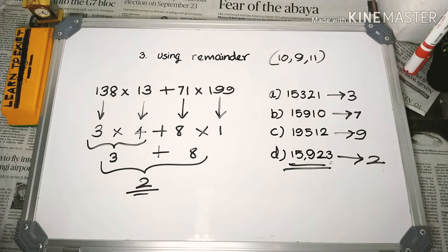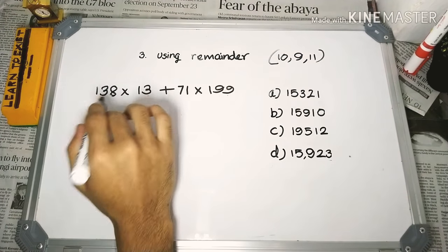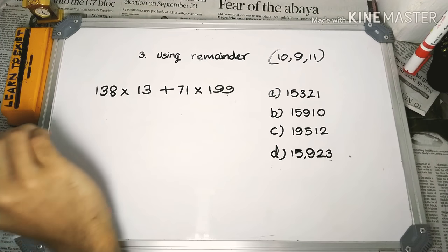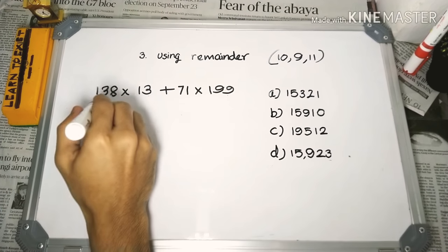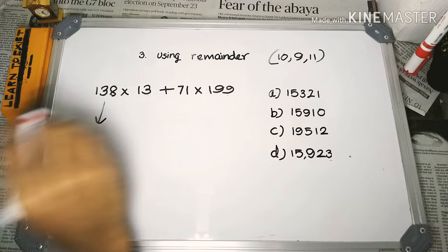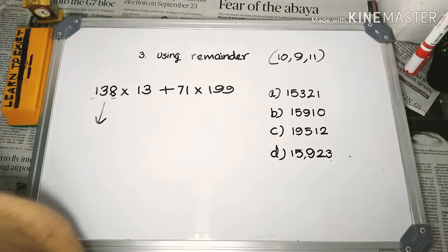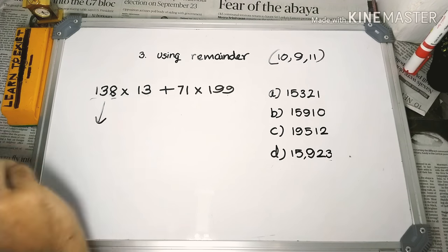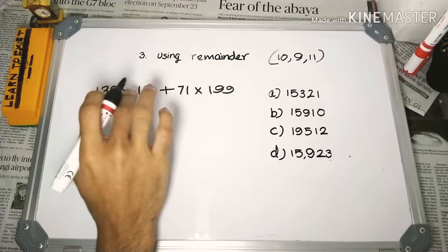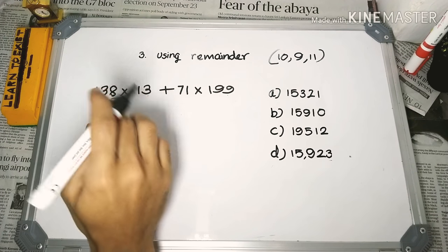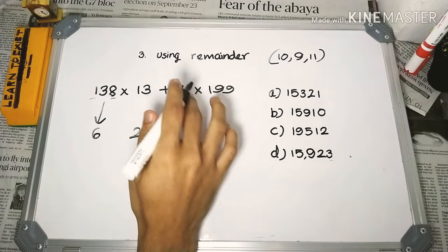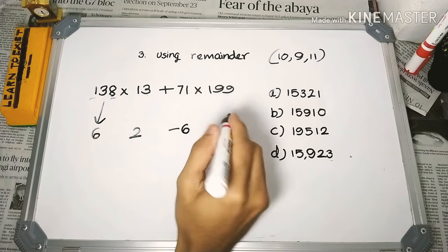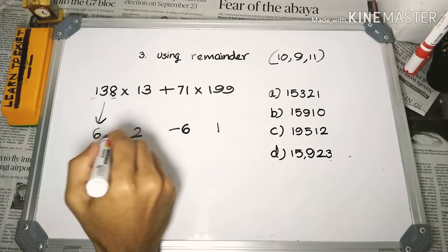Now let's look at the remainder of 11 method. For remainder 11, we use: odd place digit sum minus even place digit sum. For example, with the number 138: odd place digits are 8 and 1, so 8 + 1 = 9; even place digit is 3. So 9 − 3 = 6. Another number: odd place minus even place gives 3 − 1 = 2. For 199: result is 1. This means all signs repeat.